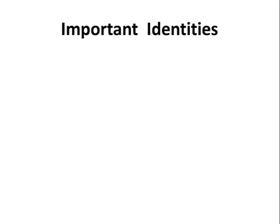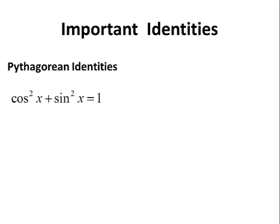To get us started, there are some important identities from trigonometry that will make our journey into trigonometric integrals doable. We start off by reviewing the Pythagorean identities. The first one: cosine squared x plus sine squared x equals 1. The second one is 1 plus tangent squared x equals secant squared x. And the third one is 1 plus cotangent squared x equals cosecant squared x.